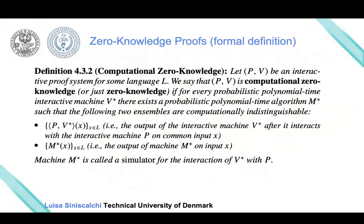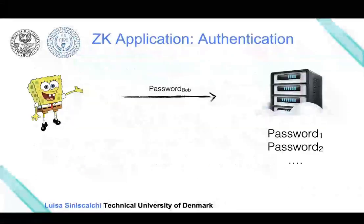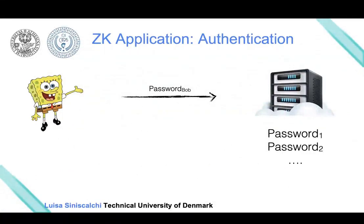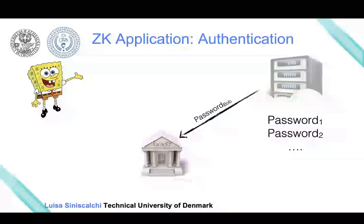One possible application of zero-knowledge—just to show why it can be useful—is authentication. Suppose Bob wants to authenticate to a server he subscribed to previously and wants to access this service. What he can do is send his username and password to the server, which can then verify and authenticate him. But the server can be malicious.